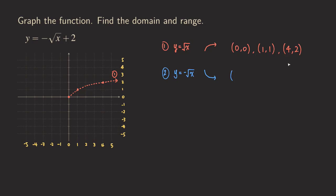The x-values stay the same: 0, 1, and 4. For the y-values, we multiply each by negative one — zero stays zero, one becomes negative one, and two becomes negative two. So our three key points are (0, 0), (1, −1), and (4, −2), and we can now graph y equals negative square root of x.